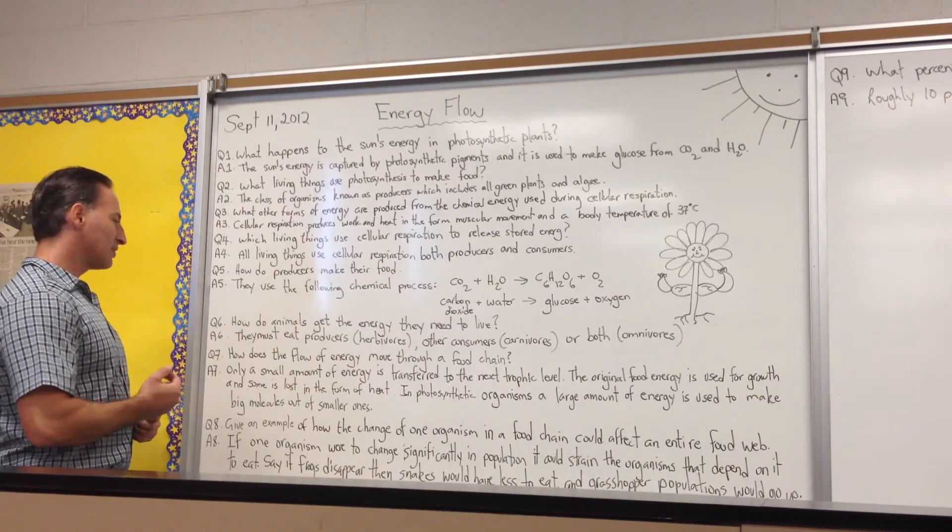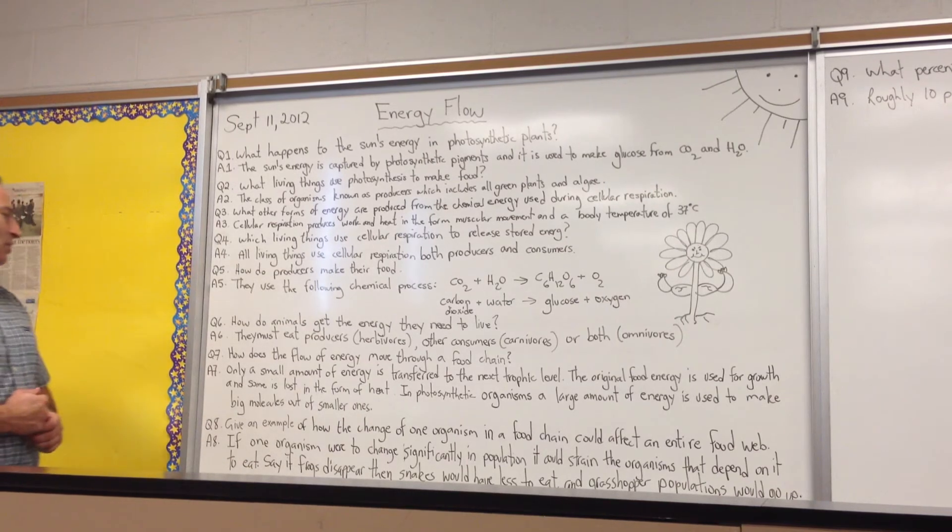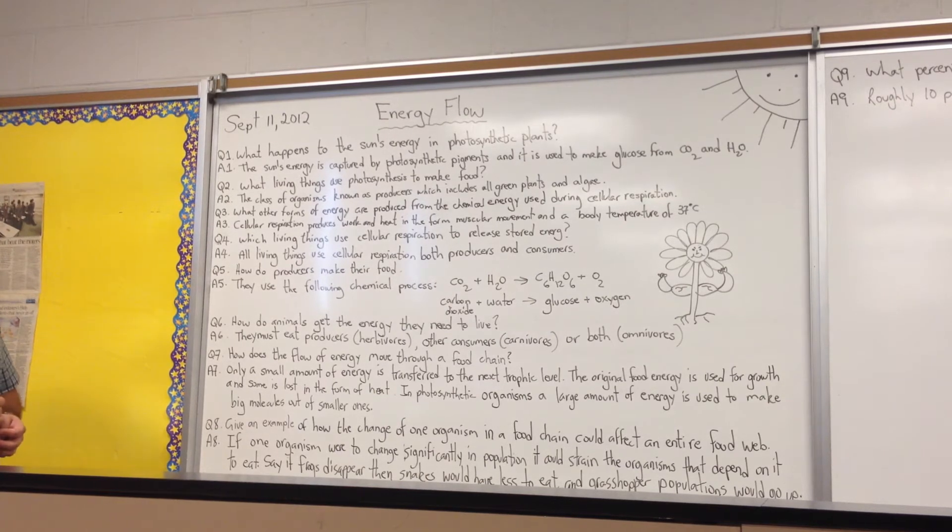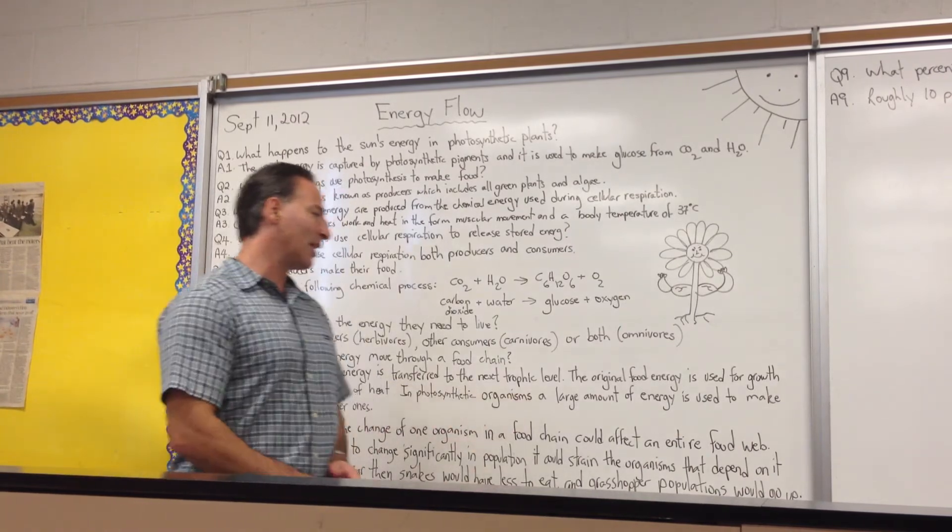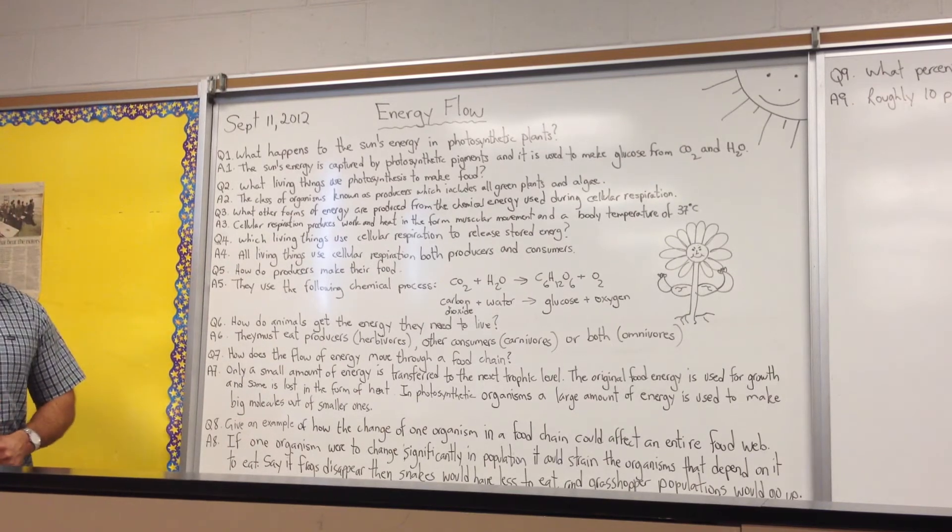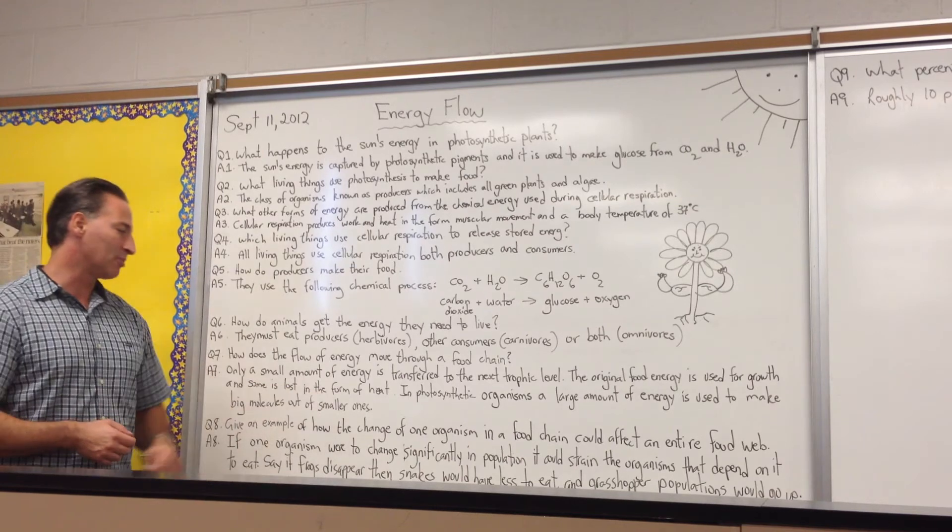The seventh question is, how does the flow of energy move through a food chain? And the answer is that only a small amount of energy is transferred to the next trophic level. The original food energy is used for growth, and some is lost in the form of heat. In photosynthetic organisms, a large amount of energy is used to make big molecules out of the smaller ones.